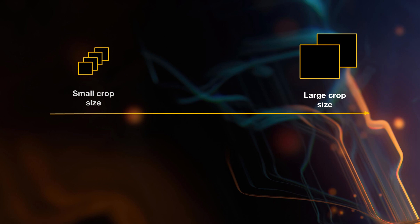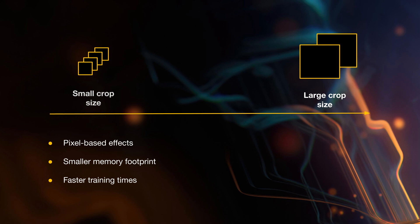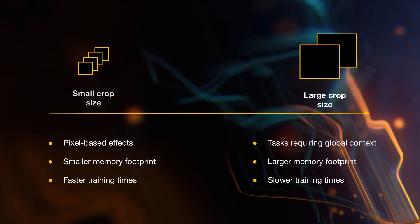Smaller crop sizes are useful for tasks that don't need to learn much global context, like pixel-based effects — for example, upscaling. On the other hand, tasks like face editing or human segmentation may need more context when training and so require a larger crop size.